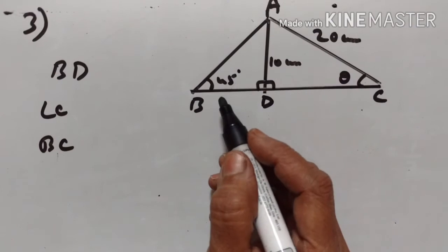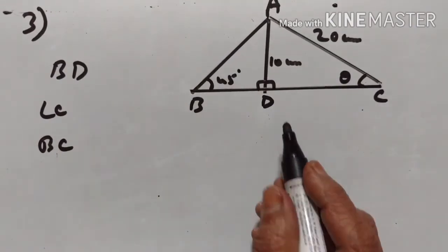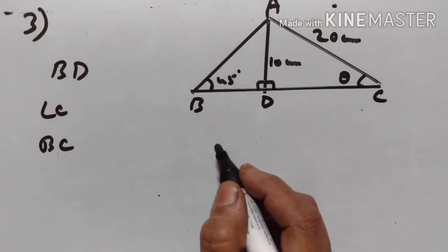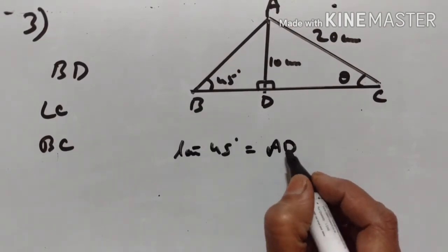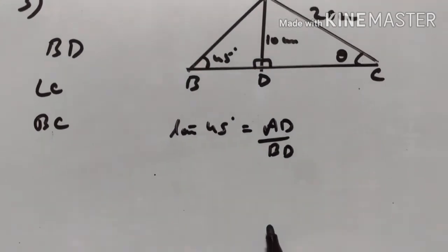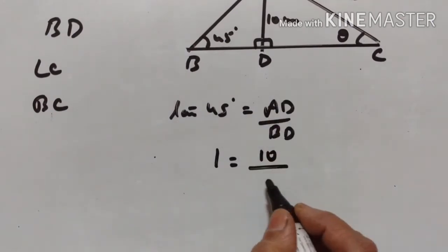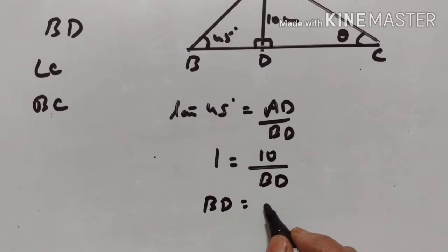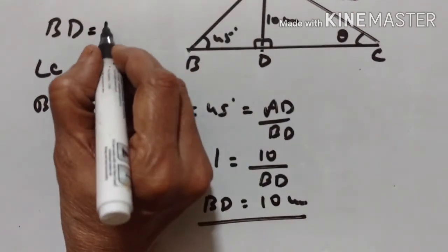You have to use this information to find the length of BD, angle C, and length of BC. Now, AD upon BD is tan 45°. Tan 45° is equal to AD upon BD. Tan 45° is equal to 1. So 1 equals AD upon BD, where AD is 10 cm. Therefore BD is equal to 10 upon 1, so BD equals 10 cm.